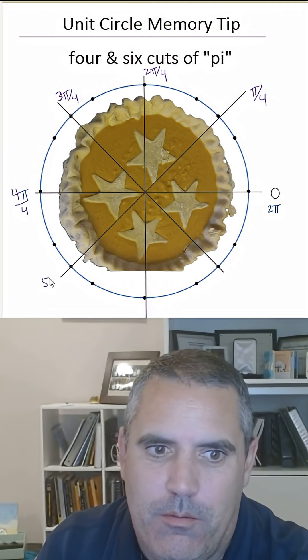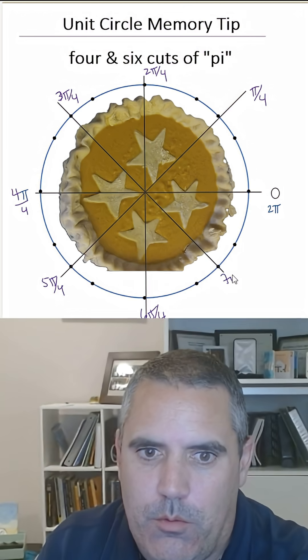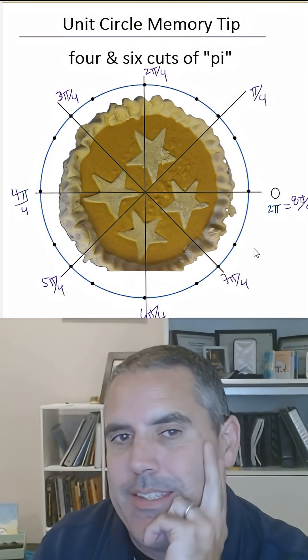4π/4, 5π/4, 6π/4, 7π/4, and 8π/4. I think it's because we reduce fractions is why students don't remember these things.